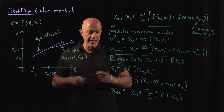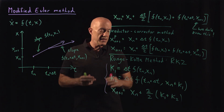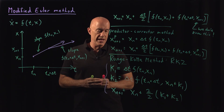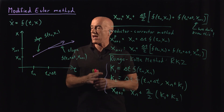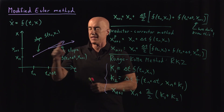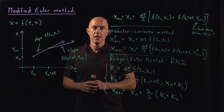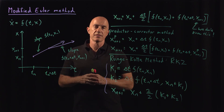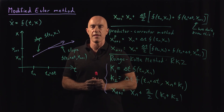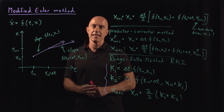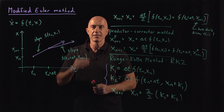The idea in the next video is to generalize this. You don't have to consider the slope at the beginning and end of the interval — you can consider the slope anywhere within the interval, subject to constraints that ensure it becomes a second-order method. We'll see how that works in the next video. I'm Jeff Chasnov. Thanks for watching and I'll see you in the next video.